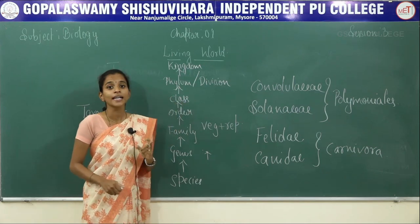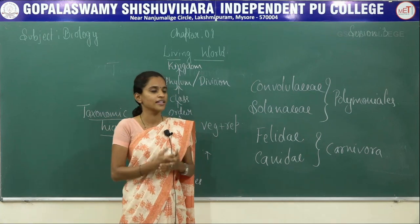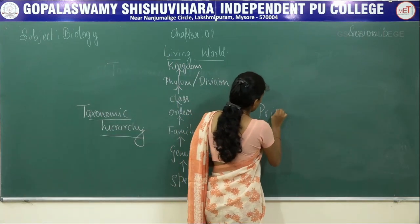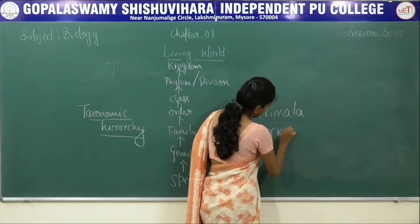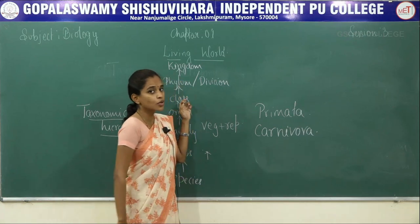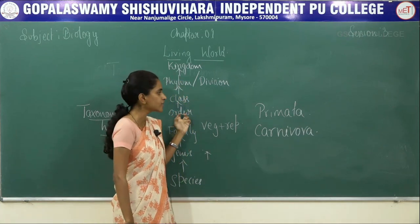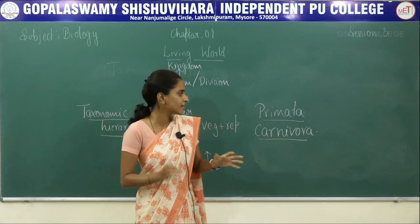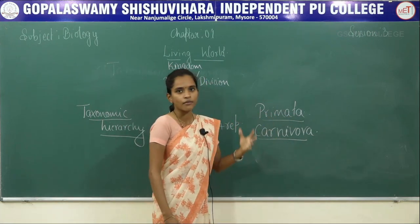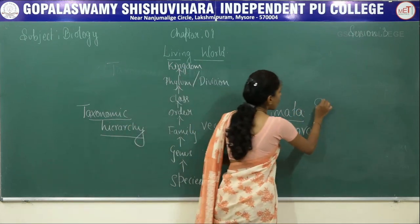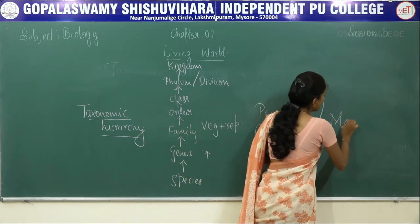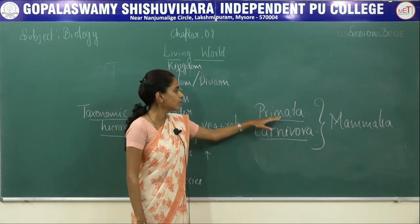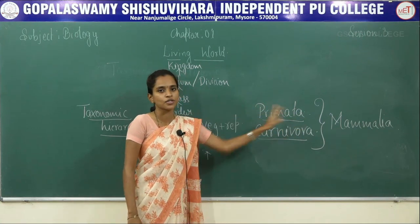Next category is class. Class again has lesser similarities and more differences, and it includes a group of orders. For example, Primata and Carnivora are two orders — Primata includes human beings, gibbons, and gorillas. We already discussed Carnivora, which includes Felidae and Canidae. Both of these orders belong to the class Mammalia. So a group of orders represents a class.